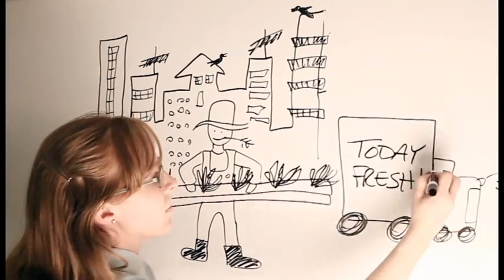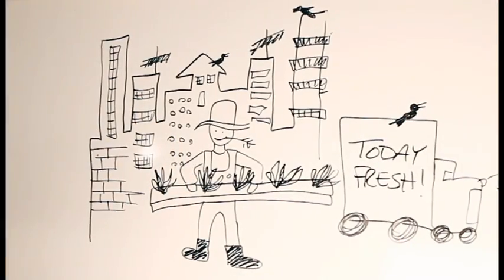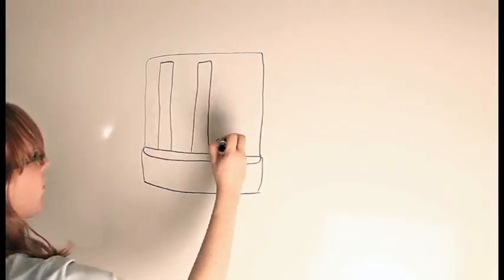Instead, Farmer Joe just takes his towers, gives them a rinse, and puts them on a delivery truck. In this reality, the towers go to several places once they're on that truck.